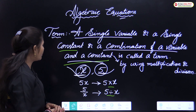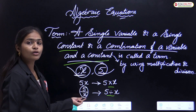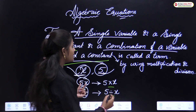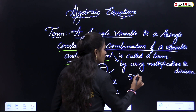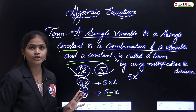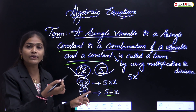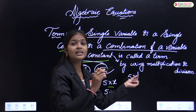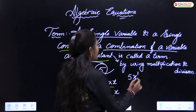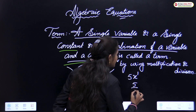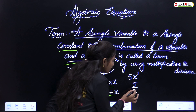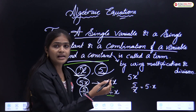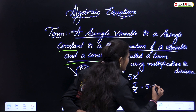Now, here 5 by x — what is the power of x? In 5x, the power of x is 1. For 5 by x, when converting to multiplication form, it becomes 5 into x to the power minus 1 — because when x is in the denominator with positive power, moving it to the numerator makes the power negative. For example, 5 by x squared becomes 5 into x to the power minus 2.